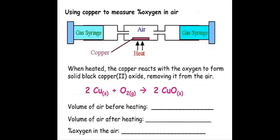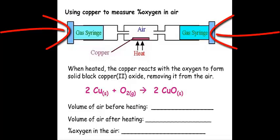The first method for determining how much oxygen is in air involves apparatus with two gas syringes connected to a silica tube containing copper. The copper is heated strongly with a Bunsen burner while air is pushed back and forth using gas syringes, so air and oxygen can pass over the copper.